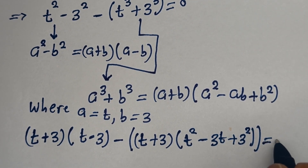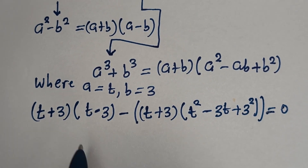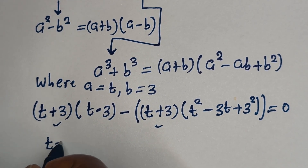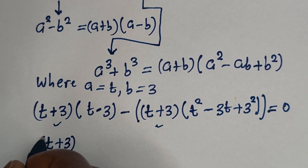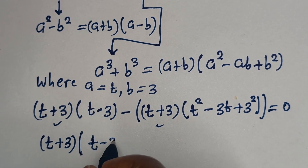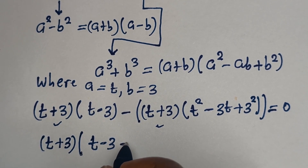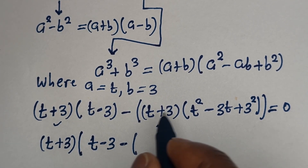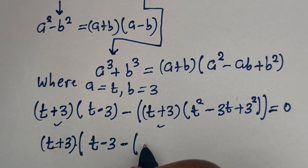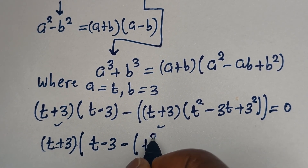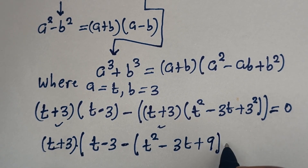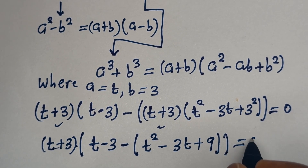This is equal to 0. Now, t plus 3 is common — let's bring it out. We have t plus 3, bracket, and if we divide by this common factor, we get t minus 3, then minus, and dividing the whole of the second group by t plus 3, we have t squared minus 3t plus 9, equal to 0.